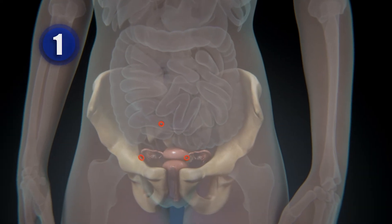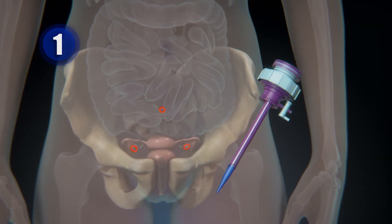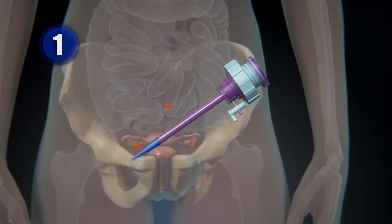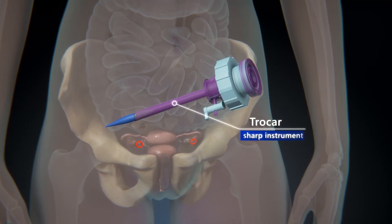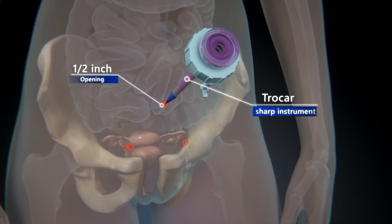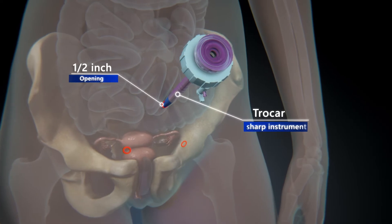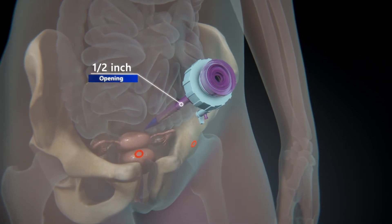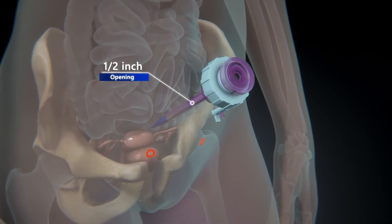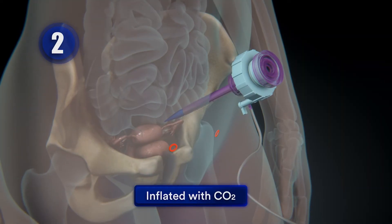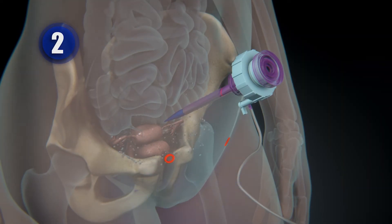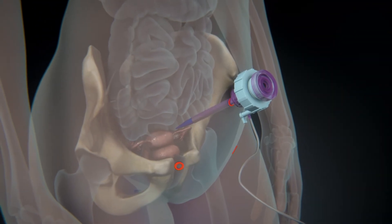Your surgeon will gain access to the interior of your pelvis by using a sharp instrument called a trocar to make a small half-inch opening or port just below your navel or umbilicus. Your abdomen will then be inflated with carbon dioxide gas pumped through this umbilical port so that its contents can be seen more clearly.